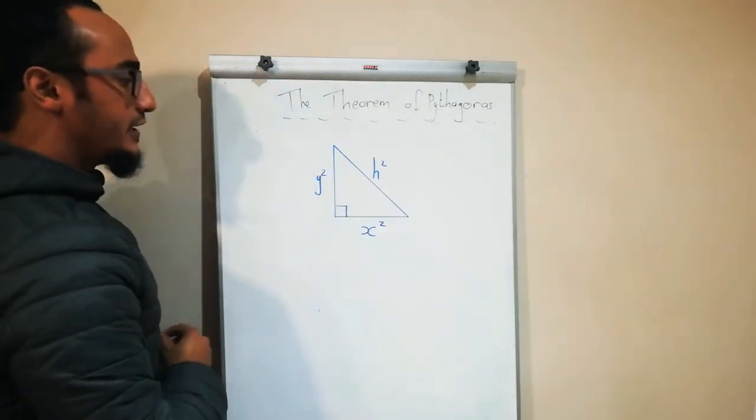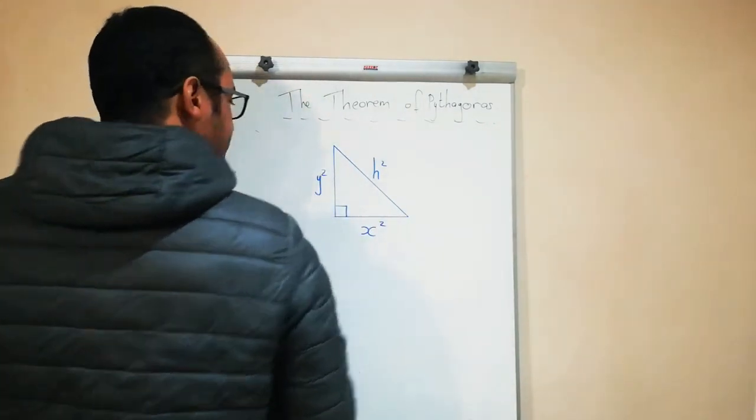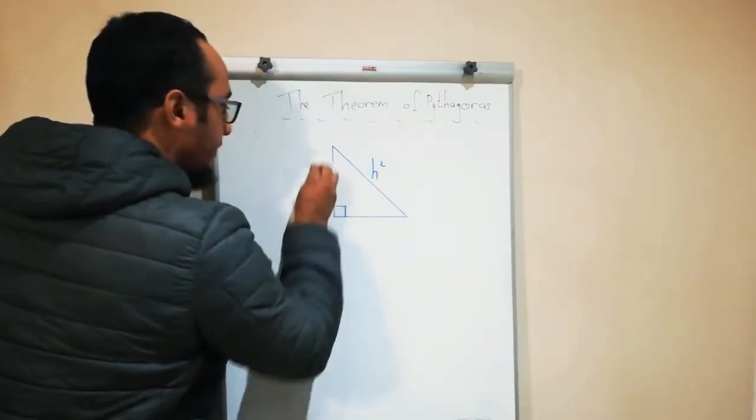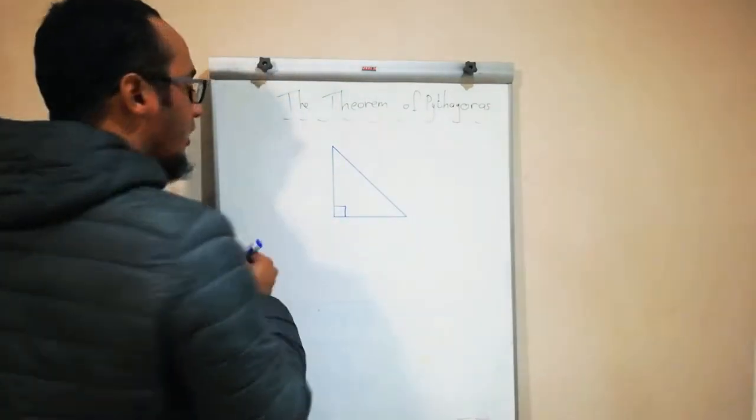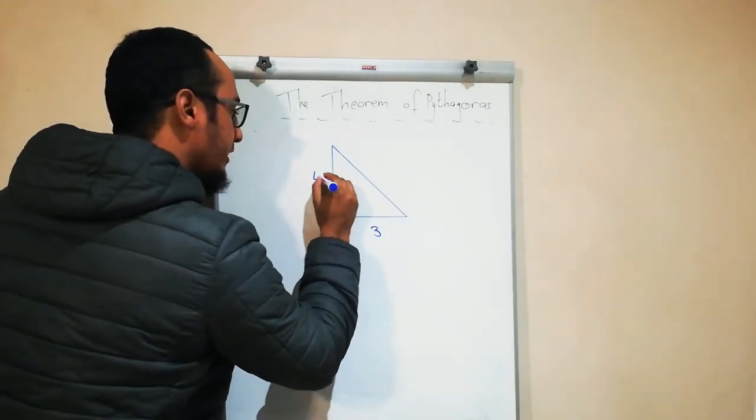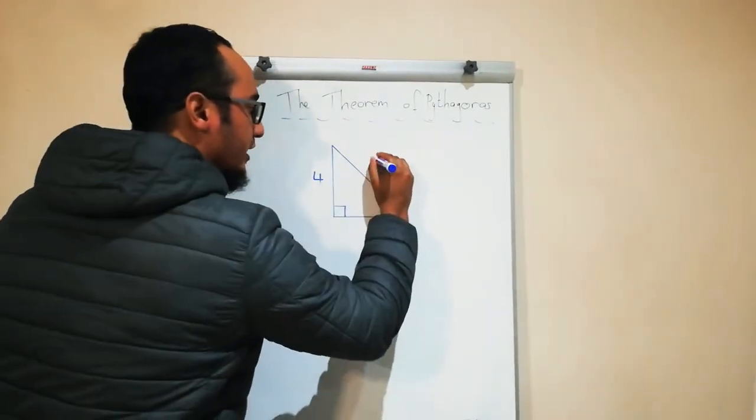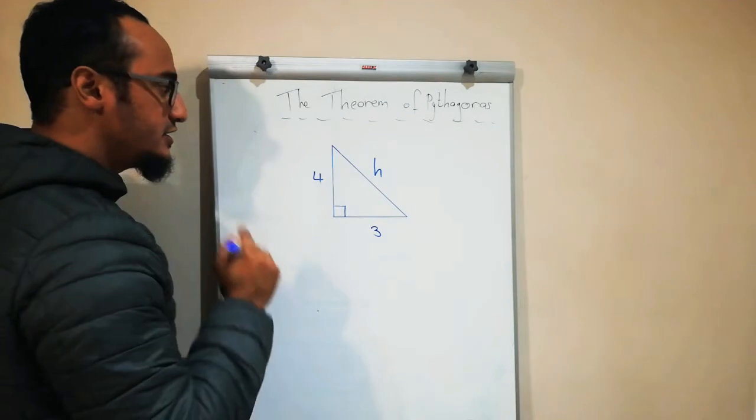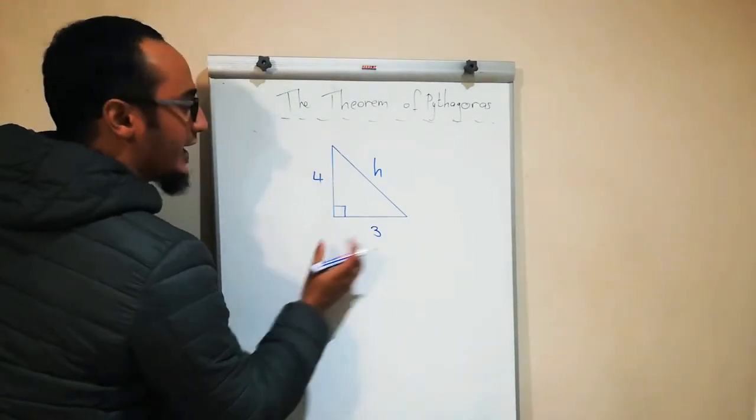Now let's put some digits in there. If I, for example, were to say x is 3 and y is 4, we need to calculate h. The first thing we do is write down our formula.